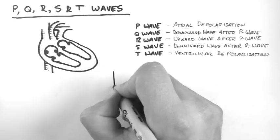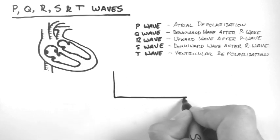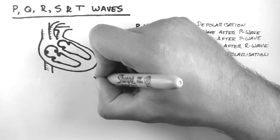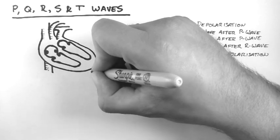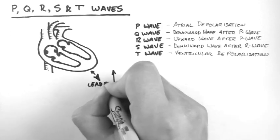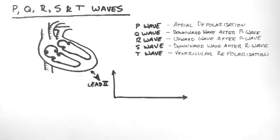So we are going to have a look at an ECG trace from lead 2. Remember that lead 2 looks at the heart from this direction. So it will see depolarisation or repolarisation that occurs towards or away from it.